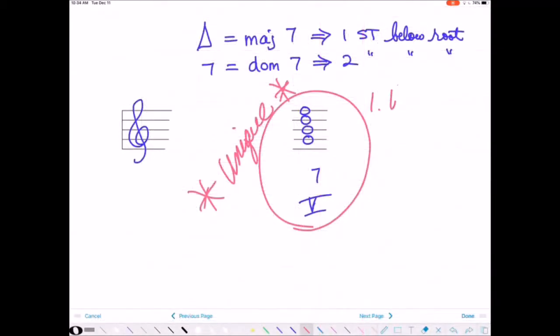In every major scale, the five chord is the only chord that is a seventh. Amazing. Okay, who cares, you say? Well, number one, what if we want to know what key we're in when we're playing a lead sheet or any kind of music?